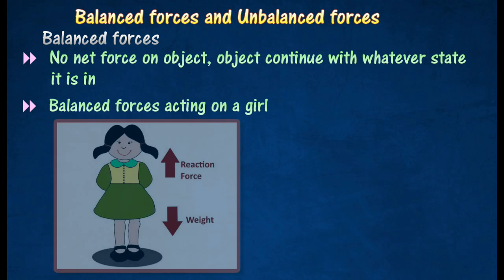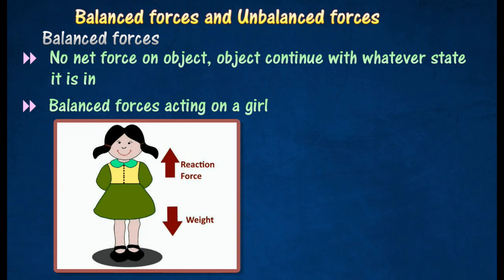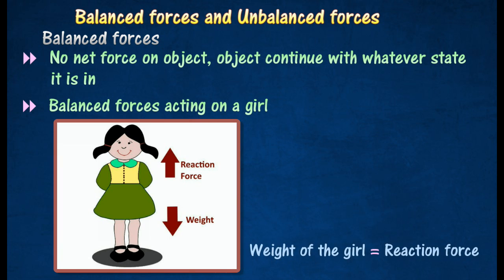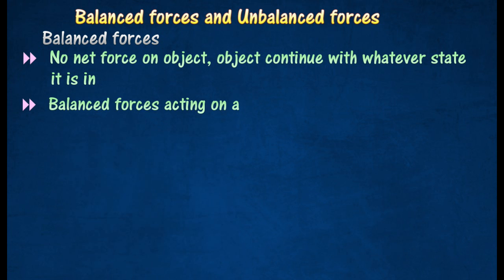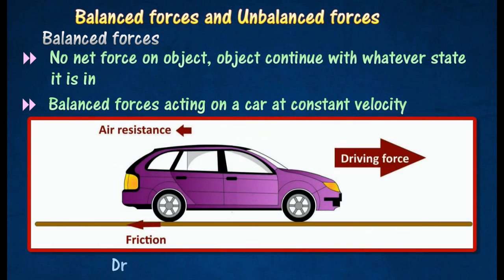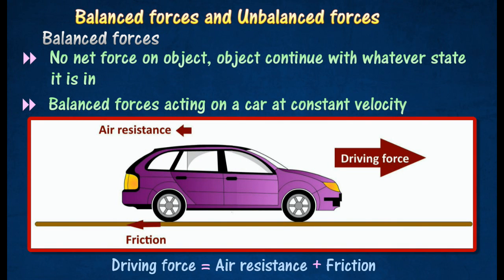For example, the weight of the girl is balanced by the reaction force exerted by the floor on the girl. So the net force acting on the girl is zero, indicating that the girl is at rest on a level floor. When a car travels at a steady speed, the driving force from the engine is balanced by air resistance and friction. The resultant force is zero.